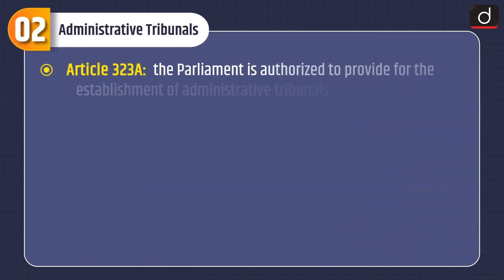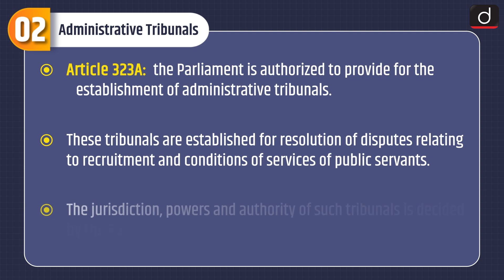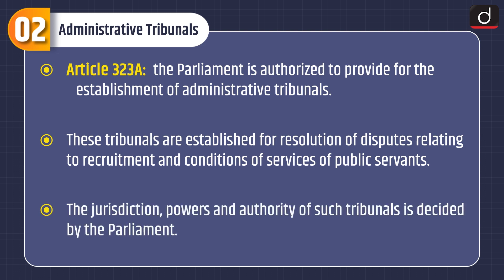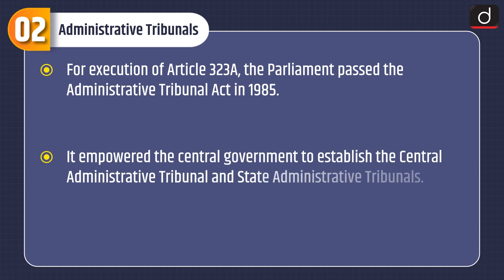Now let's discuss about Administrative Tribunals. According to Article 323A, the Parliament is authorized to provide for the establishment of Administrative Tribunals. These tribunals are established for resolution of disputes relating to recruitment and conditions of services of public servants. The jurisdiction, powers and authority of such tribunals is decided by the Parliament. For execution of Article 323A, the Parliament passed the Administrative Tribunal Act in 1985, which empowered the Central Government to establish the Central Administrative Tribunal and State Administrative Tribunals.